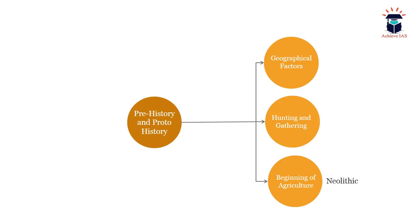You might be aware that proto-history and prehistory is basically that phase of history when there is no written account, or if a written account is available, it is not deciphered. In prehistory and proto-history you have to read about the geographical factors which shaped Indian history, the hunting and gathering communities of the Paleolithic and Mesolithic periods, and the beginning of agriculture in the Neolithic period. UPSC may ask map-based questions or short questions on a particular site, and you will have to write about that particular site.